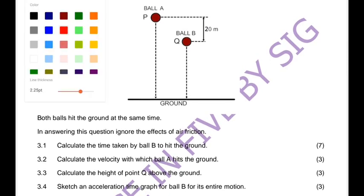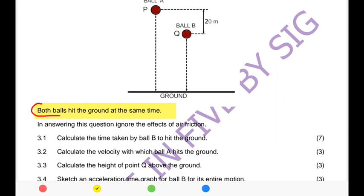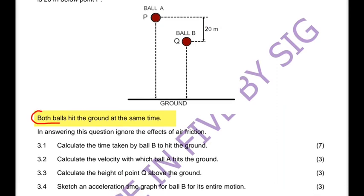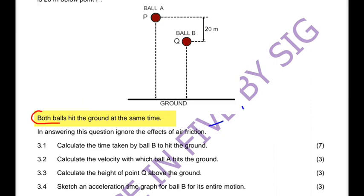Both balls hit the ground at the same time — that is a very important piece of information. We also ignore the effects of friction, so we automatically know we're dealing with free fall motion.